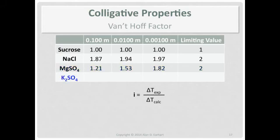What's the name of this? Potassium sulfate. How many ions are in potassium sulfate? That's your limiting value. It's approaching three. You got two potassiums, one sulfate, total of three.